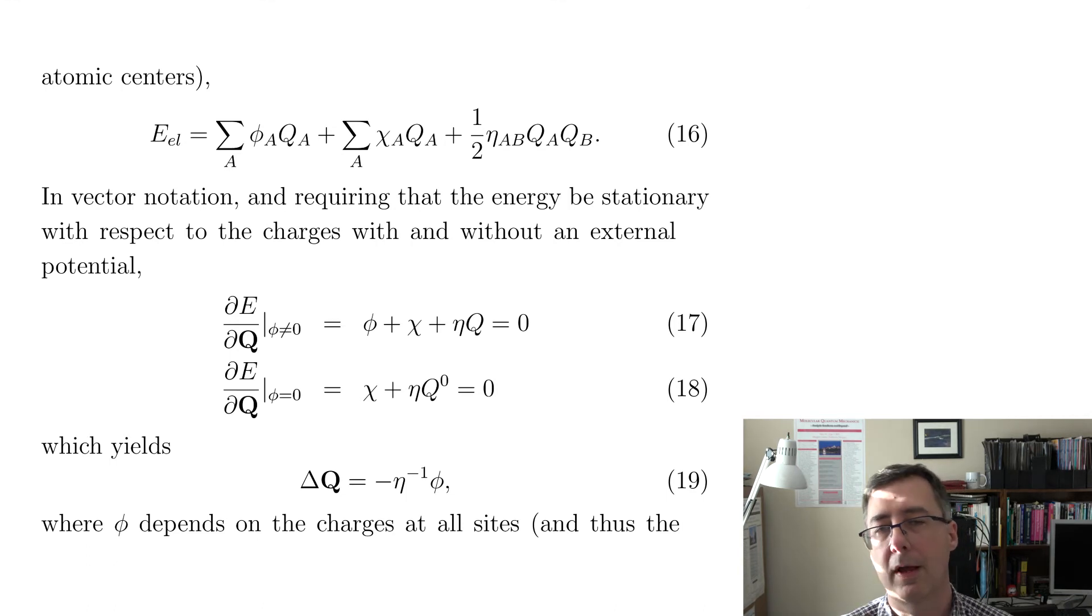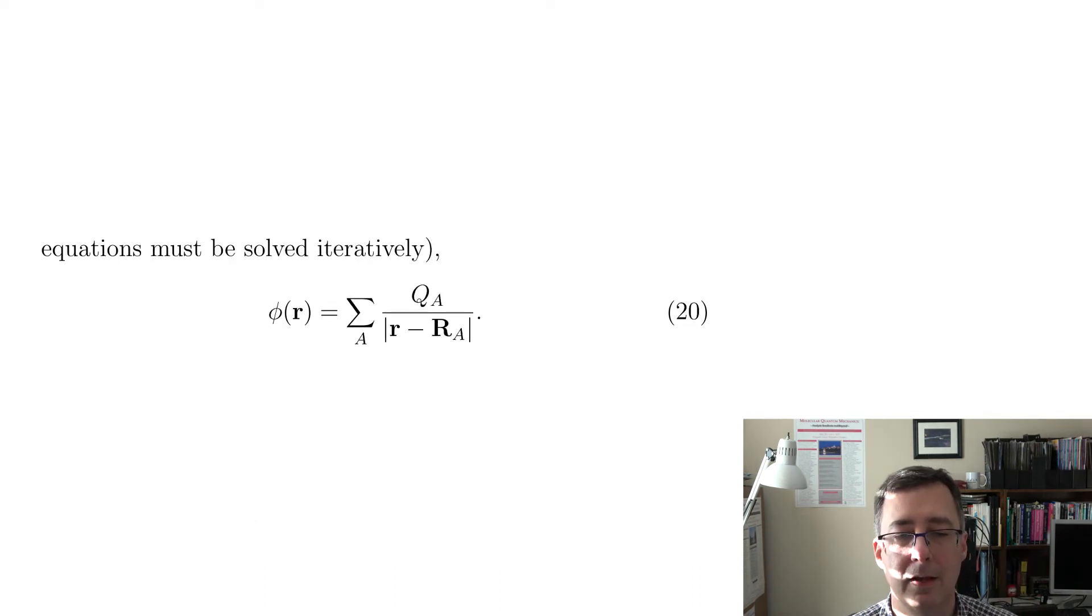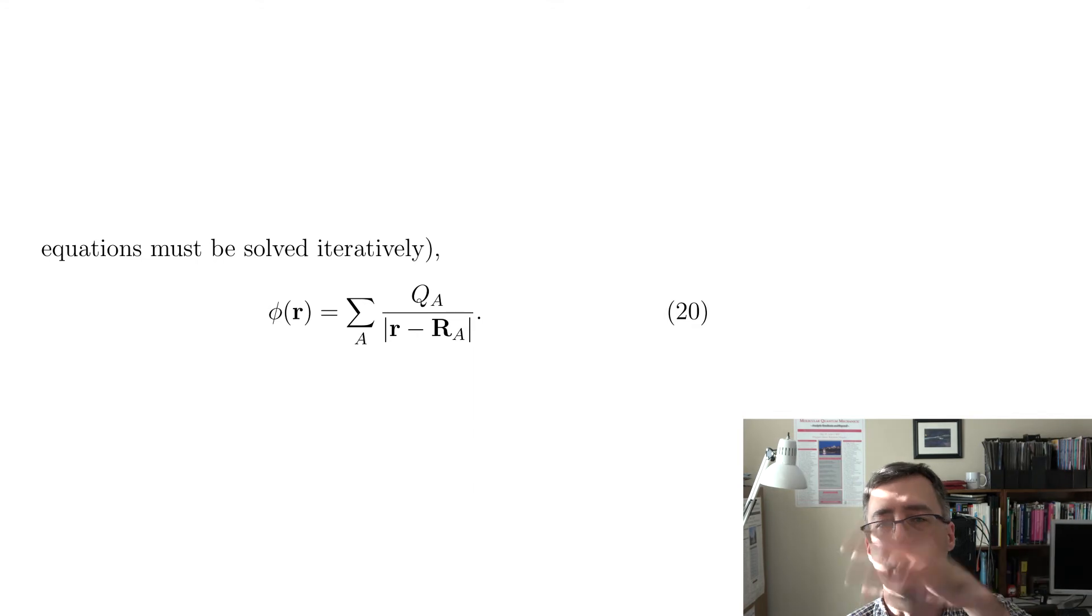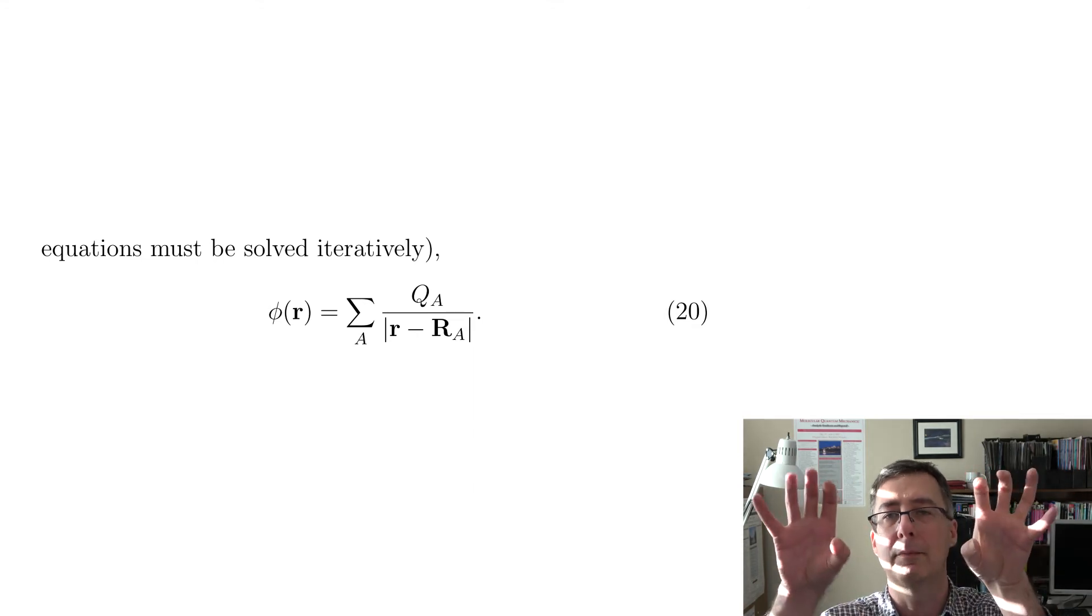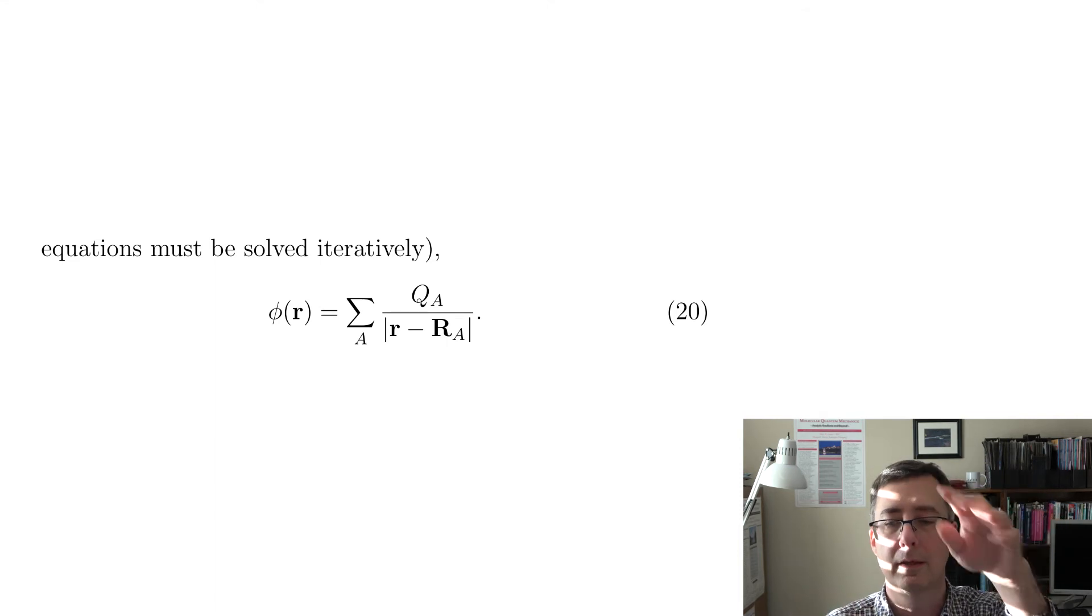And of course you have to solve it self-consistently because the potential phi depends on the charges. So I need the charges Q to get phi, but I need phi to get how the charges change delta Q. So I've got to solve it all self-consistently. And the potential we've already seen if I'm assuming atom-centered point charge model, which I am for this fluctuating charge model, then that's just equation 20.